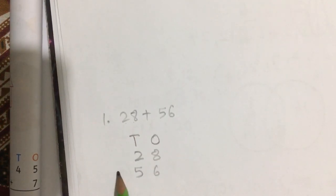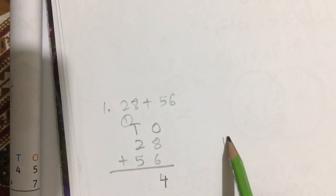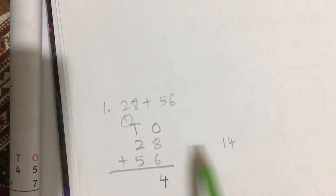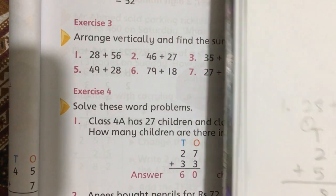And 56. You have to add them. 8 plus 6 is equal to 14. We will write 4 here and carry over 1. You have to write 4 down and carry 1 to the next number. 5 plus 2 is equal to 7, plus 1 is 8. So 84 is the answer. Next is 46 plus 27.